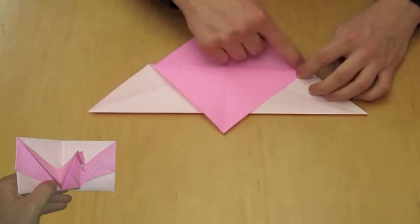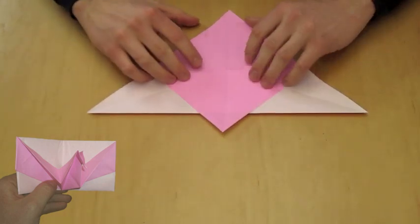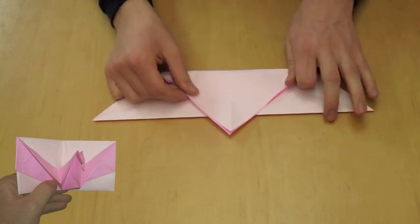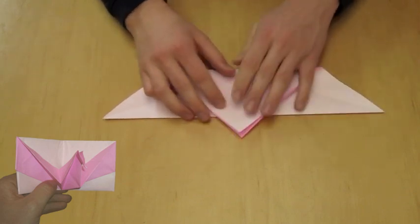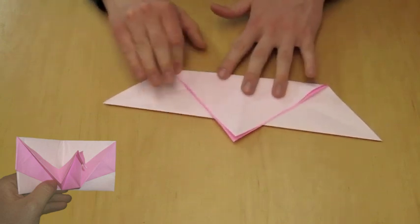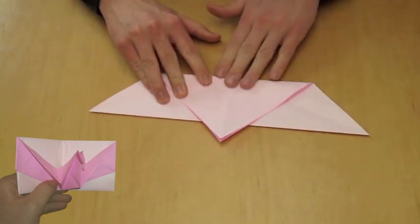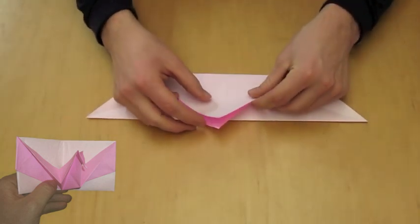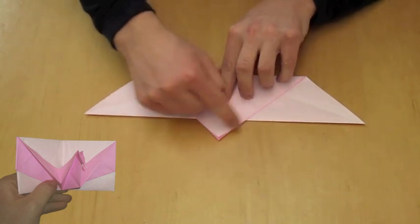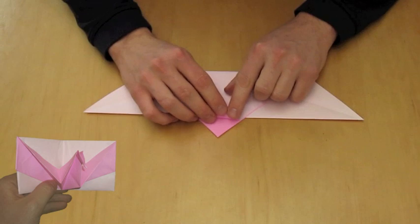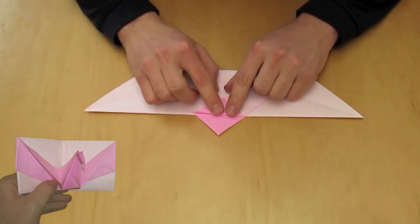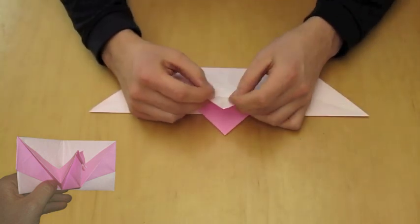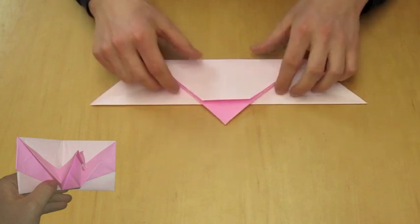Now you're going to valley fold the tip to the other tip so that you don't see any color on your paper. Now, just flip that over and mountain fold it to the other side so that you can't see it anymore.